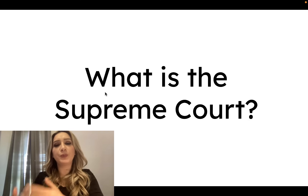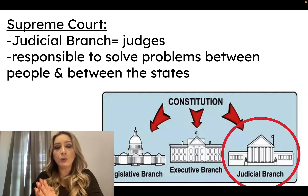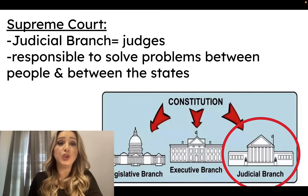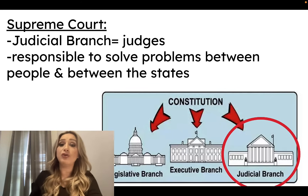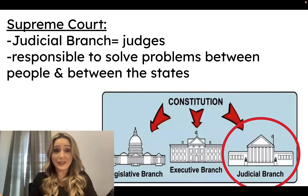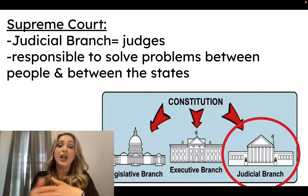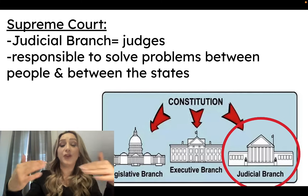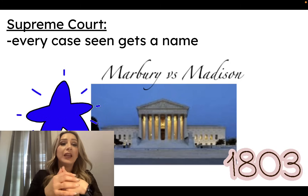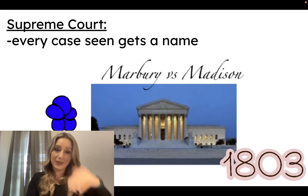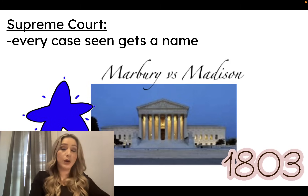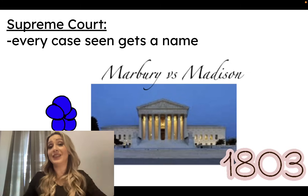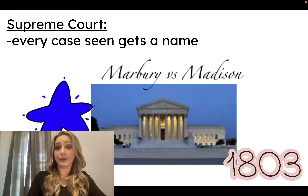The Supreme Court is one of the three branches of government known as the judicial branch - think judicial, judges. There are nine judges, and their job is to solve problems between the states or between the people and the states. Court cases go all the way to the Supreme Court, and every case gets a name. This case is called Marbury versus Madison, because Marbury is suing Madison for not delivering the commissions, the paperwork.